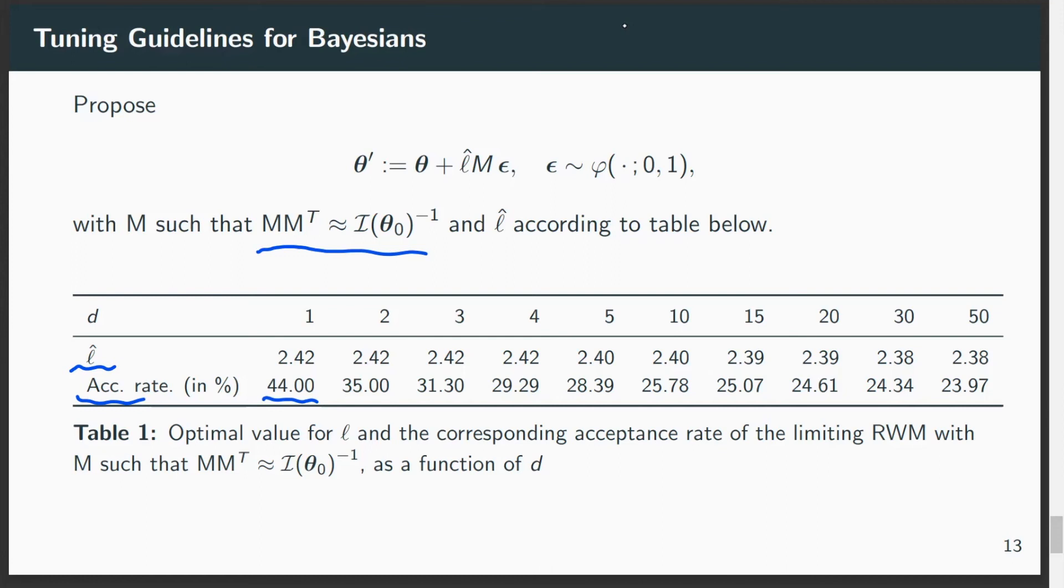But this also helps the practitioner to say, well, let's say I have four parameters in my model, how should I tune the algorithm? You should choose L to be roughly 2.42 and target an acceptance probability of 30%.